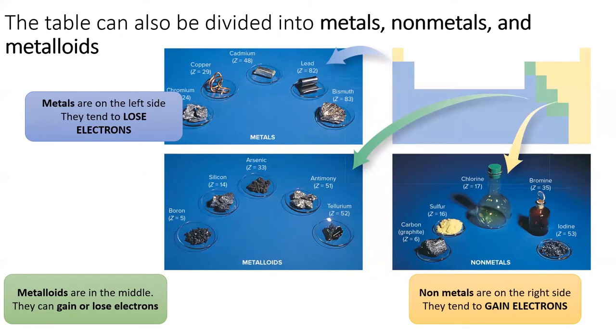Nonmetals live on the right side of the table. In general, nonmetals hold tightly to their electrons and want to gain more. We'll see that this will cause them to share electrons and form compounds called molecules.